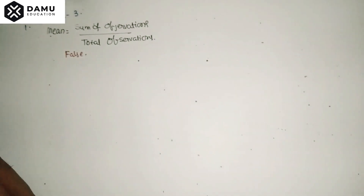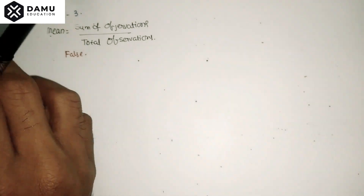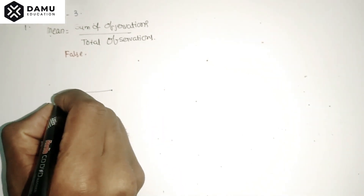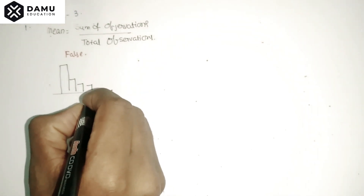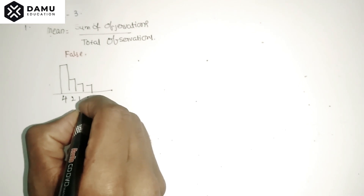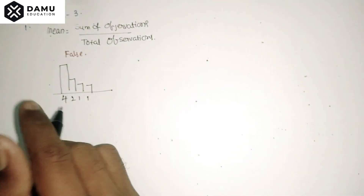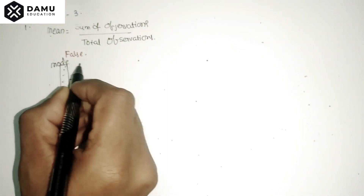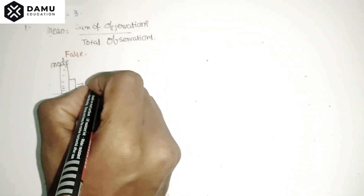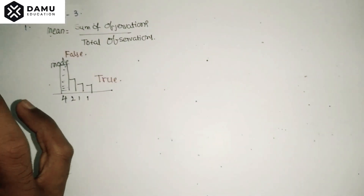Our second statement is: in a bar graph, the bar which has greater length may contain the mode. Let's take a bar graph — if an item is repeated four times, that item is the mode. So yes, the bar with the greatest length may contain the mode. That is true.